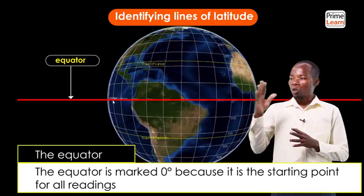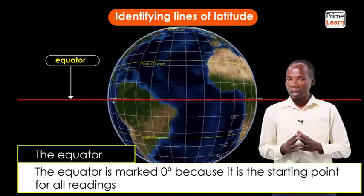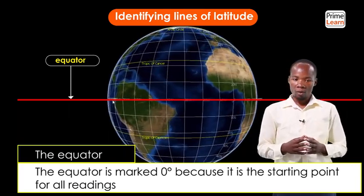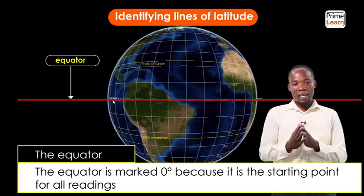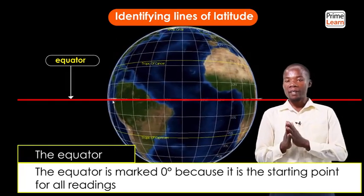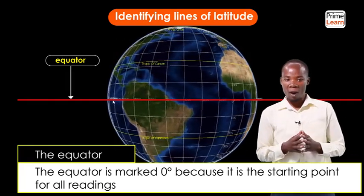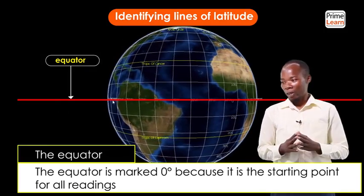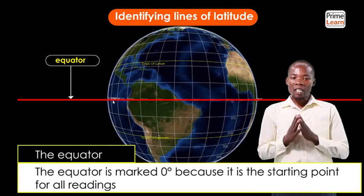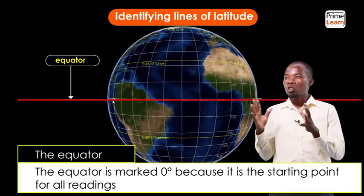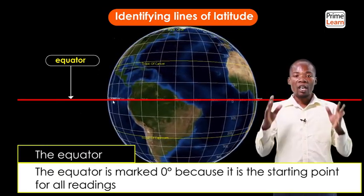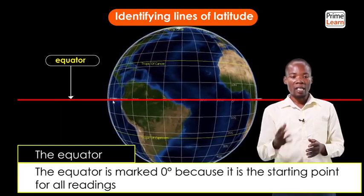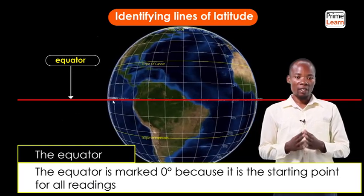The equator is the starting point for all readings of lines of latitude. The equator passes through Uganda, our nation — we are very lucky for that. The equator divides the world into two equal hemispheres: the northern hemisphere and the southern hemisphere.